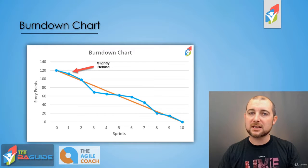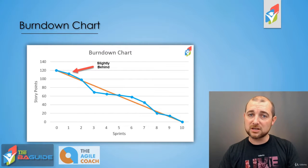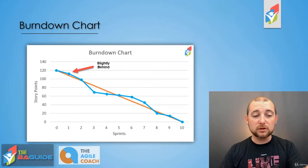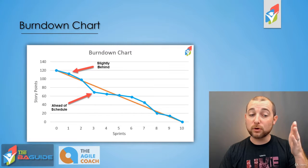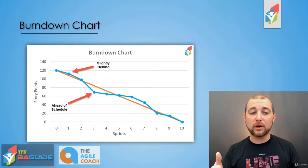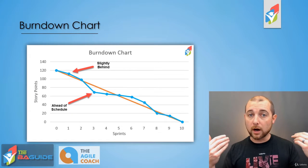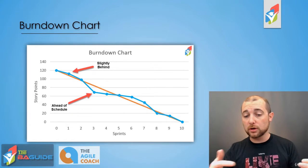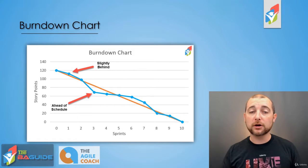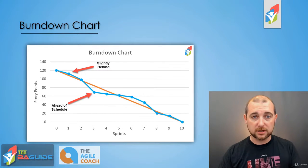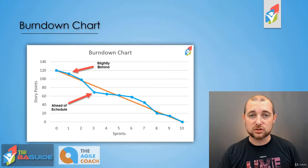As we move into our second sprint, you can see we caught up a little bit — we were able to complete some additional story points and catch up towards that trend. As we look at sprint three, we actually got ahead of schedule. We were able to complete more story points than what we needed to in order to achieve the full 120 story points at the end of the project in 10 sprints.